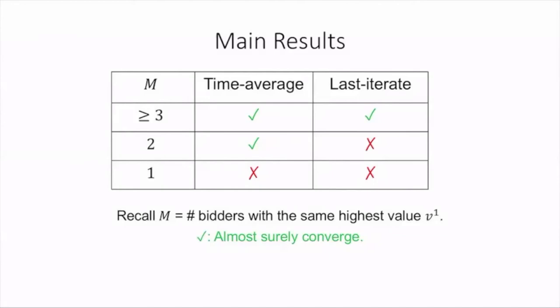However, for the third row, if M is only one, we also construct an interesting counterexample to show that they may not converge either in last iterate nor in time average. Besides, our experiments of epsilon-greedy and multiplicative-based updates, which are typical no-regret mean-based algorithms, also show that they may not converge in this case.